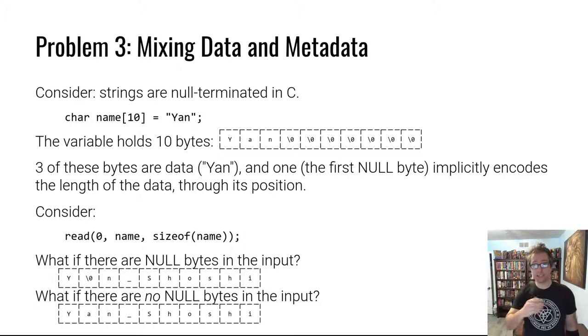the name is Yan, in this case this 10 character array with initial value of Yan holds 10 bytes: Y, A, N, and then seven null bytes. Three of these bytes are data—Y, A, and N—and the null byte actually is metadata. It encodes the end of the string. This implicitly encodes the size of the string using just a single byte, and the size of this string is basically the beginning of the string up to where the null byte is.